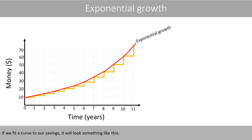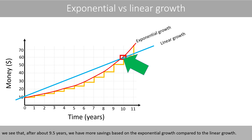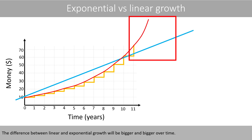If we fit the curve to our savings, it will look something like this. If we compare this curve with the blue line, which represents linear growth, we see that after about 9.5 years we have more savings based on the exponential growth compared to the linear growth. The difference between linear and exponential growth will be bigger and bigger over time.